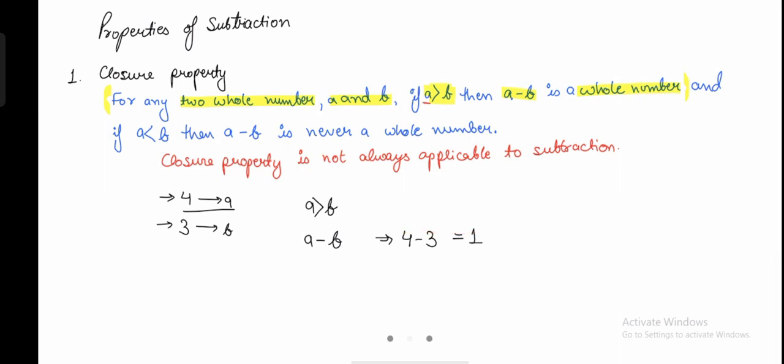What does this mean? Is 4 a whole number? Yes. Is 3 a whole number? Yes. Is 1 a whole number? Yes, 1 is also a whole number. So the closure property simply says that if you subtract two whole numbers, the result should also be a whole number. And here, when A is greater than B, you do get a whole number.